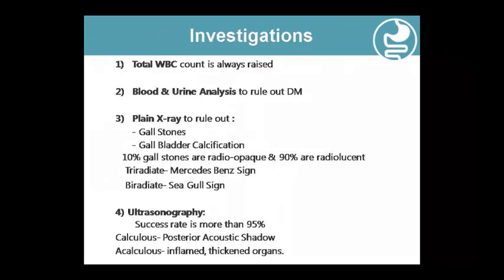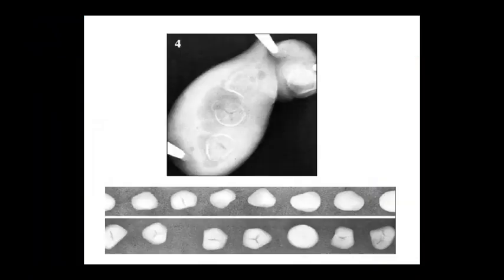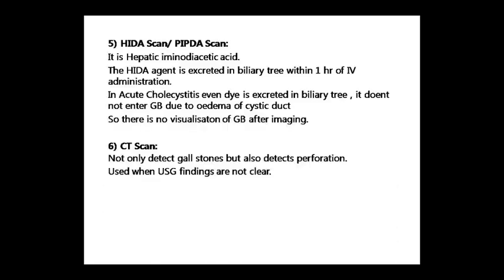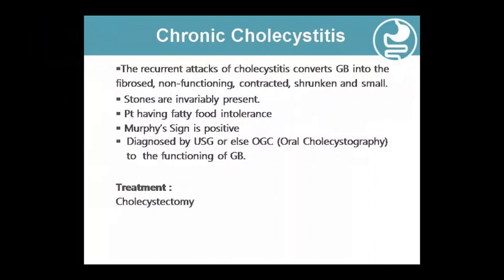Investigations include WBC count, blood and urine analysis, and checking for diabetes mellitus. A plain X-ray can show calculous. Ultrasonography is useful to visualize calculous and acalculous types and shows the real picture of the gallbladder. HIDA scan — Hepatobiliary Iminodiacetic Acid scan — and CT scan are also used.